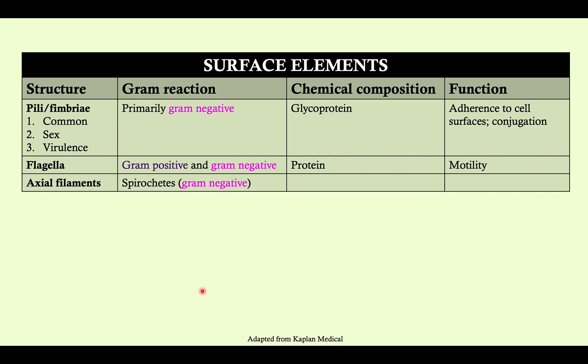There are some surface elements that you should be aware of that primarily apply to gram-negatives. One is pili or fimbriae, and there are three different kinds. As we go through our fimbriated bacteria we'll talk about these in greater detail. They're made of glycoprotein and are responsible for adhering to cell surfaces — such as mucosal membranes — and also for conjugation, which is bacterial sex.